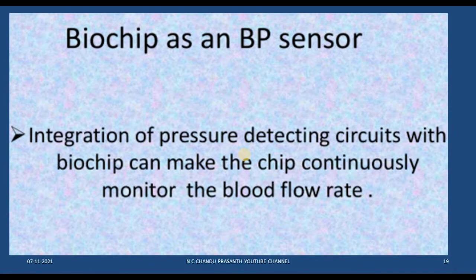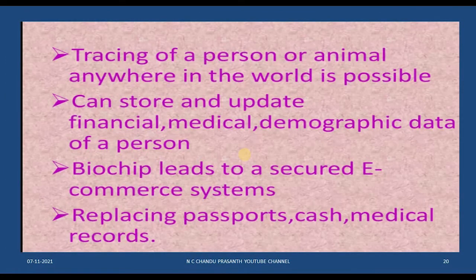The biochip also has a BP sensor — for BP patients, continuous monitoring is required, and the biochip can monitor BP continuously. Beyond medical applications, tracing of a person or animal anywhere in the world is possible. It can store and update financial, medical, and demographic data, and can replace passports, cash, and medical records, leading to a secure e-commerce system.